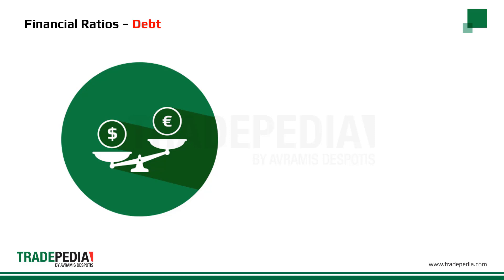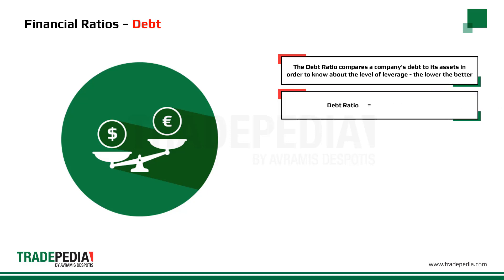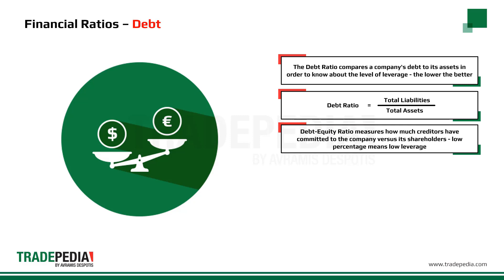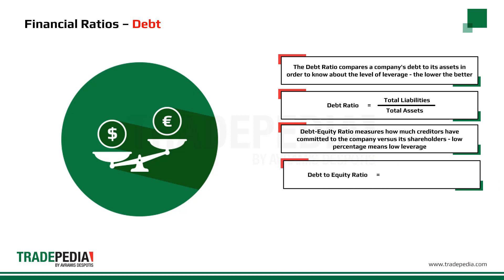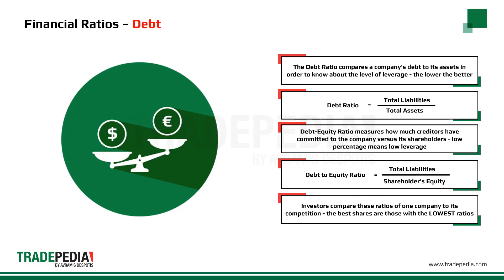Debt is a very important element in the evaluation of a company. The debt ratio compares a company's debt to its assets in order to know the level of leverage — the lower, the better. The debt ratio is calculated by dividing total liabilities by total assets; lower values reflect a better situation for the firm. The debt-to-equity ratio measures how much creditors have committed to the company versus its shareholders — a low percentage means low leverage. It is calculated by dividing the firm's total liabilities by the shareholders' equity. The best shares are those with the lowest ratios.